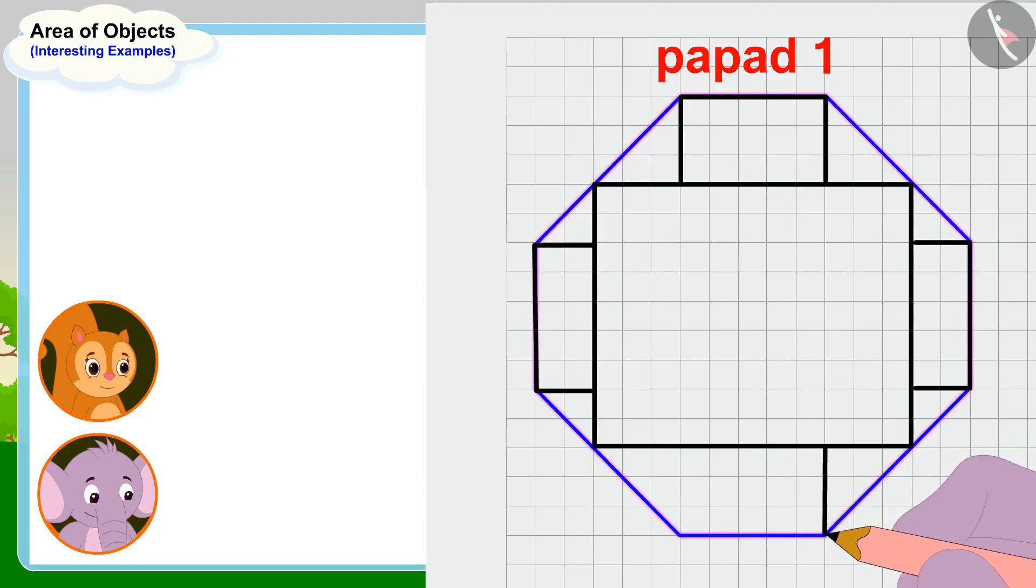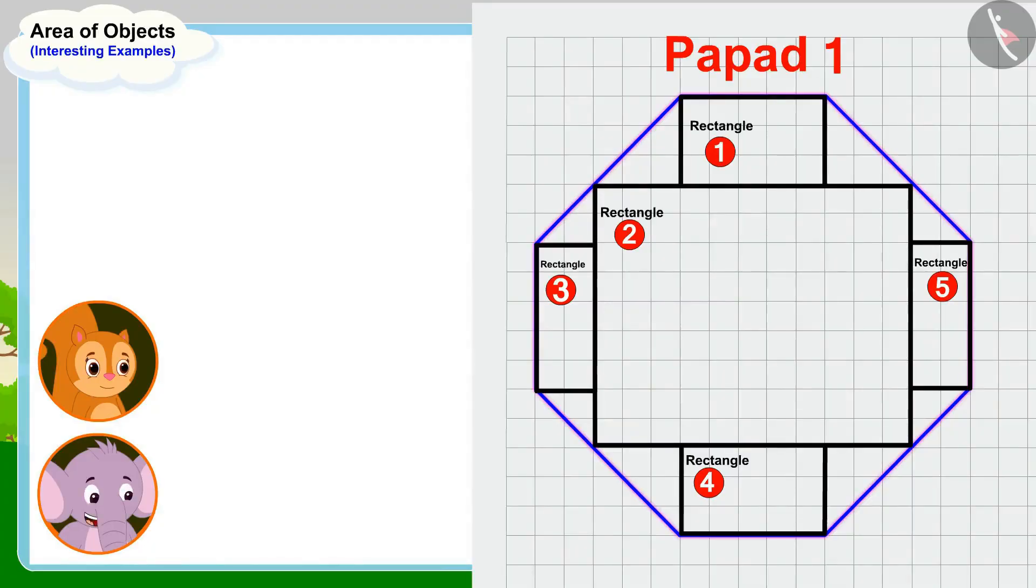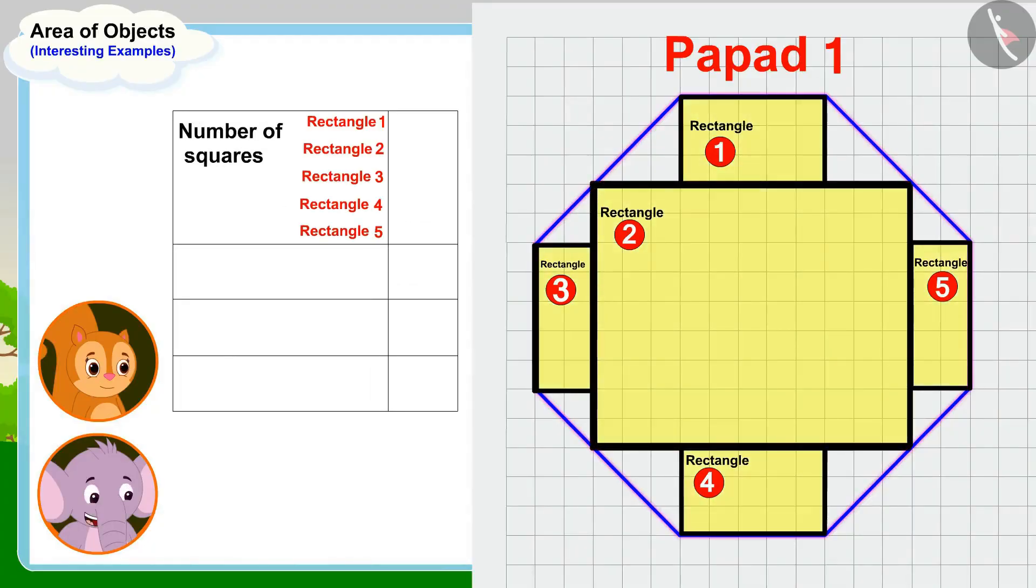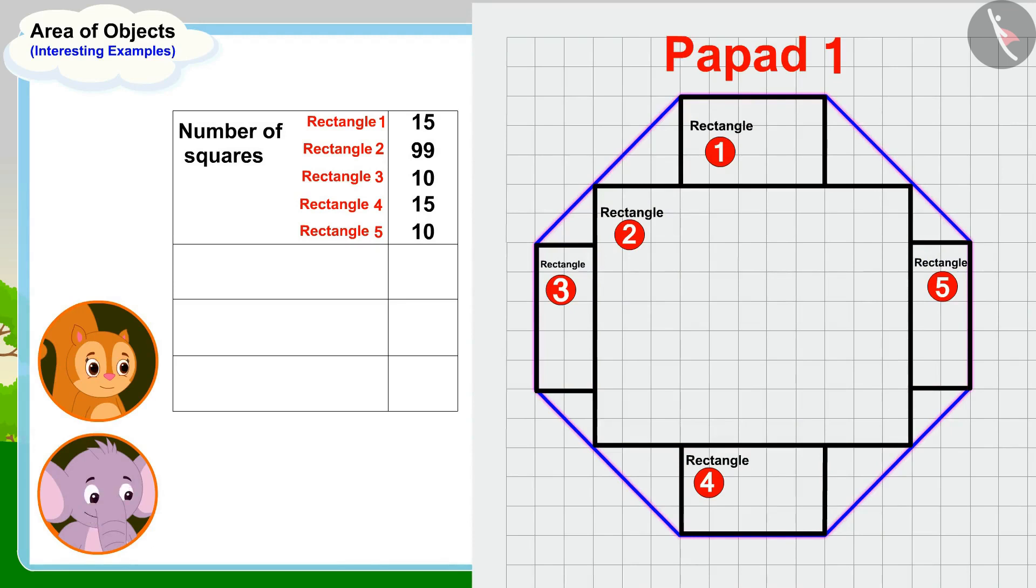Now I will write down the number of squares that fall into these rectangles. Now I will write the number of full squares left, sixteen, and finally the number of the remaining half squares, twenty, which is equal to ten full squares.